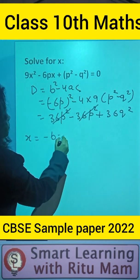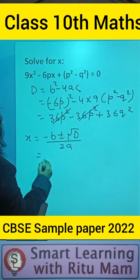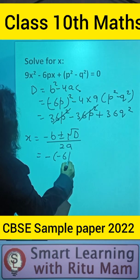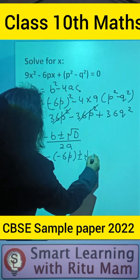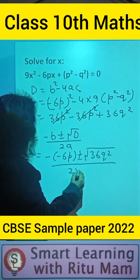Now x = -b ± √D / 2a. Put the values: -(-6p) ± √36q² / (2 × 9).